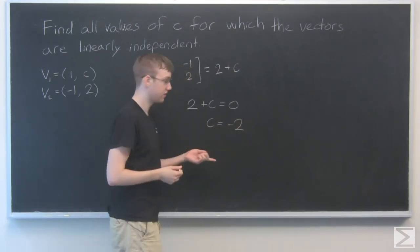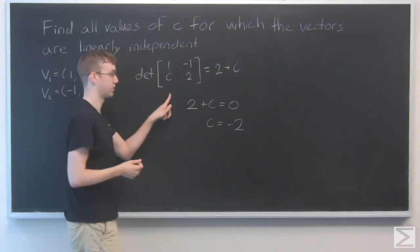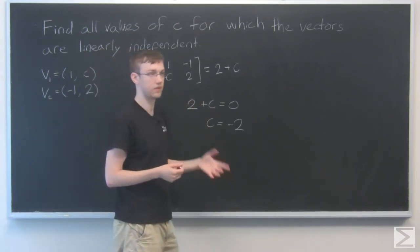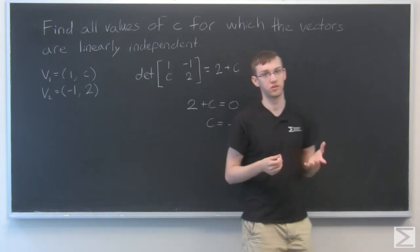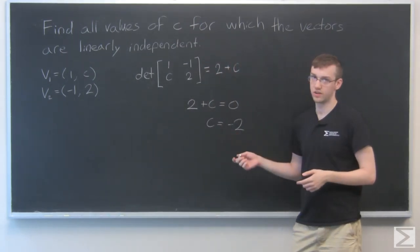So what does that represent? When C equals minus 2, the determinant of that matrix equals 0. And that means the vectors are linearly dependent when C equals minus 2.